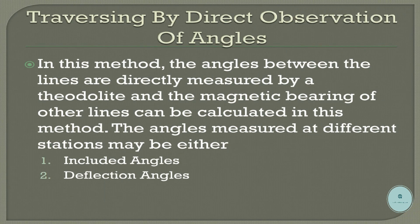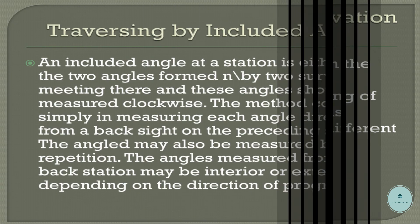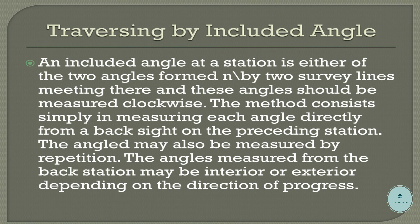Traversing by direct observation of angles: in this method, the angles between the lines are directly measured by a theodolite, and the magnetic bearing of other lines can be calculated. The angles measured at different stations may be either included angles or deflection angles.